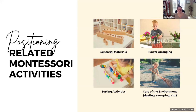Moving beyond traditional Montessori materials, a child in the positioning schema might also enjoy sorting activities by color, shape, or size — like matching colored balls and colored pegs to containers of the same color — as well as flower arranging. Care of the environment activities, like sweeping and dusting, are also relevant because they create a sense of order, which is what the child is craving. A child in the positioning schema may also be in the Montessori sensitive period for order.